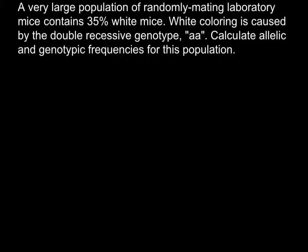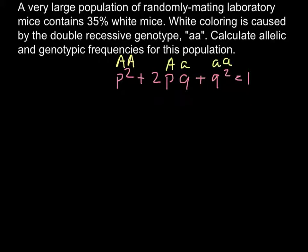I start with the Hardy-Weinberg formula: p² + 2pq + q² = 1. Here, p² represents homozygous dominant, 2pq represents heterozygous (capital A small a), and q² represents homozygous recessive (small a small a). We also know that p + q = 1, where p is capital A and q is small a.